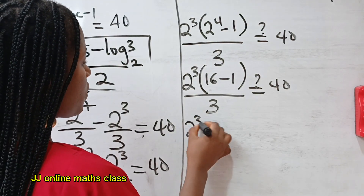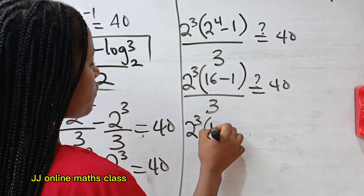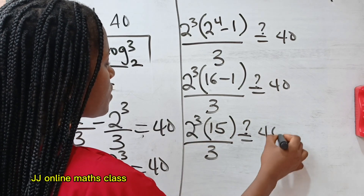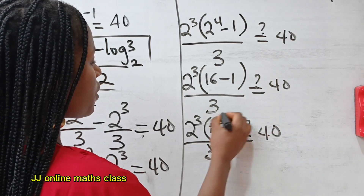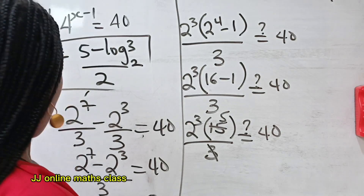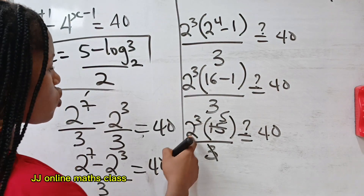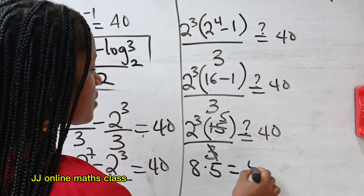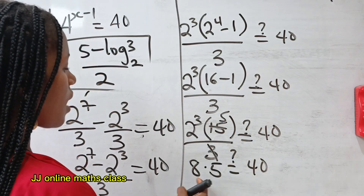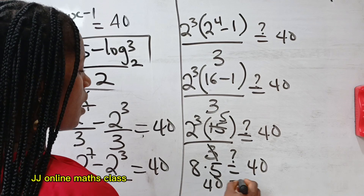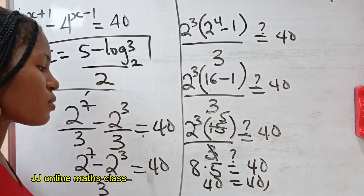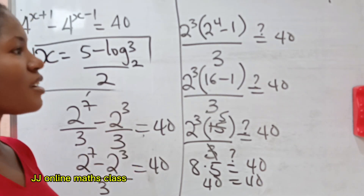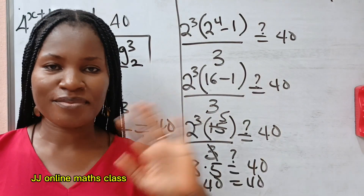We have 2^3 which is 8, then multiplied by 5. 8 times 5 is 40, and you can see that 40 is equal to 40. That proves that the answer we got is correct. Thank you so much for watching. See you in my next video. Bye.